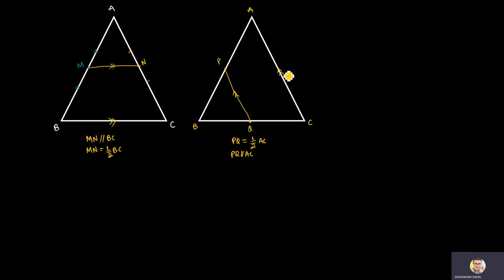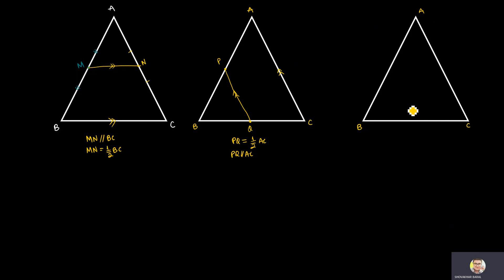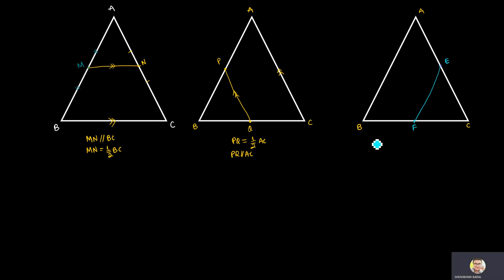I hope you have read this theorem in class 9 also. Let me take the same triangle again — triangle ABC. We can take another two sides: AC has midpoint E and BC has midpoint F. This line EF joins the midpoints of sides AC and BC, and the statement says EF is equal to half of AB and EF is parallel to AB.